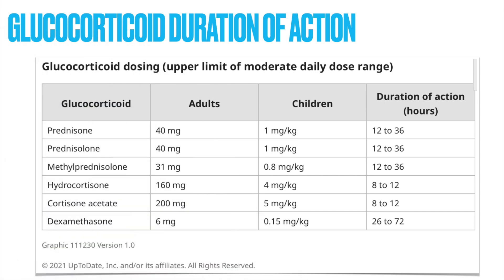This last slide is a very useful reference taken from UpToDate. I particularly like that this shows the duration of action when taking a glucocorticoid. As you can see, dexamethasone is the longest lasting, with one dose lasting up to 72 hours. This is why so often we see dexamethasone given as a one-time dose in the outpatient setting.